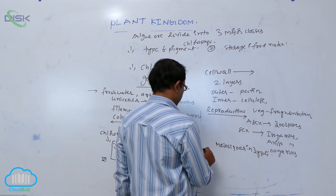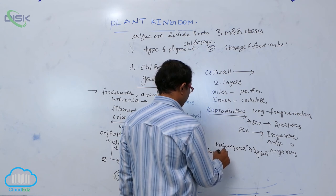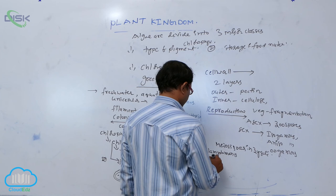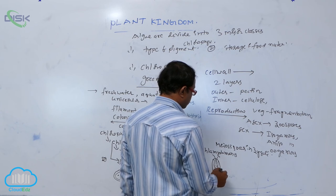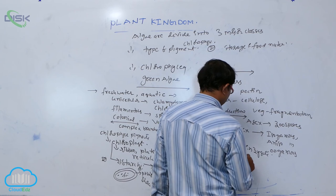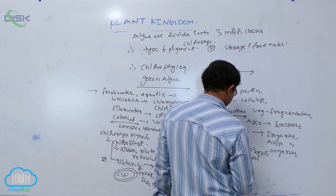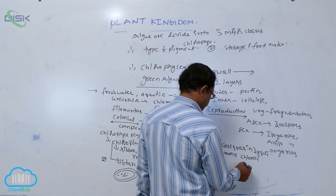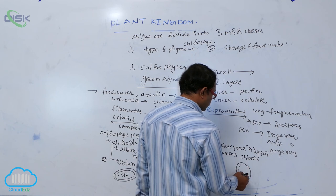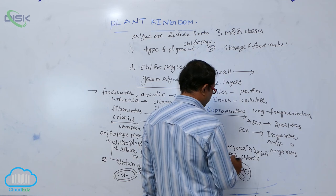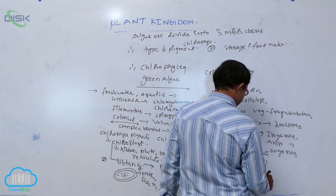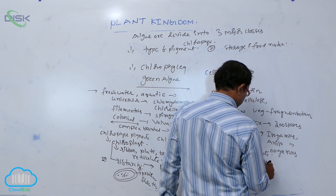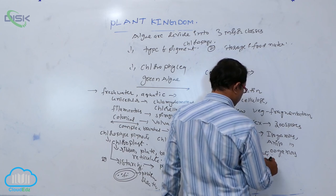Examples of green algae: Chlamydomonas has two equal flagella, a chloroplast, and a nucleus — it is unicellular. Chlorella appears spherical in shape, having a chloroplast and nucleus, also unicellular. Spirogyra is a filamentous structure appearing as a spring-like, unbranched filament.